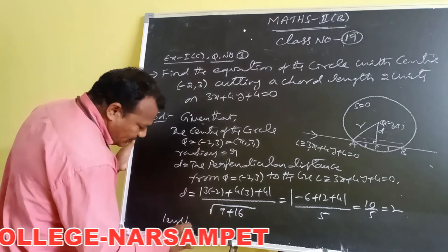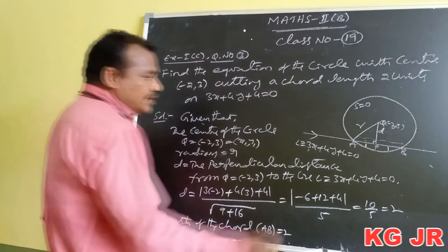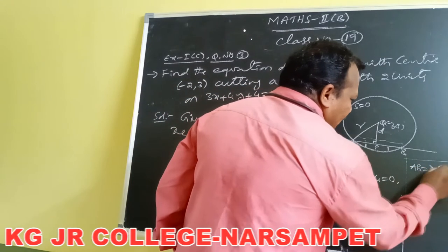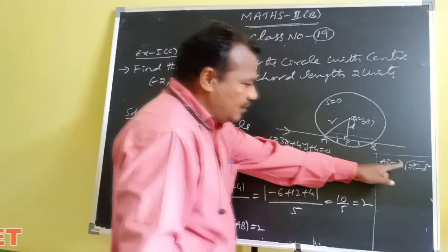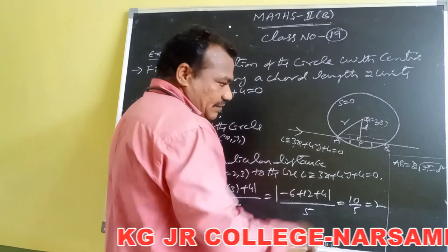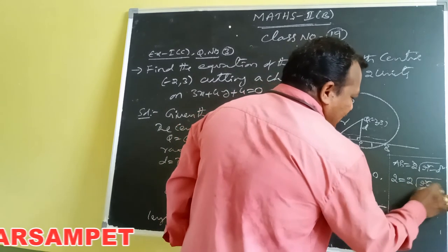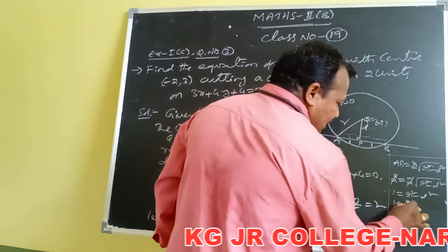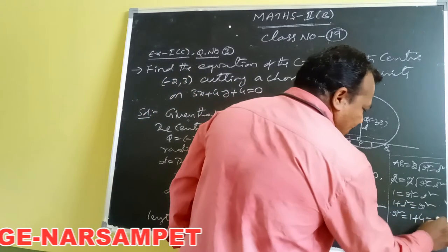The length of the chord is given by the formula AB equals 2 into root of r squared minus d squared. We know AB equals 2, and d equals 2. So 2 equals 2 into root of r squared minus d squared. Cancelling and squaring both sides: 1 equals r squared minus d squared, so 1 plus d squared equals r squared. With d equals 2: d squared equals 4, so r squared equals 1 plus 4 equals 5.